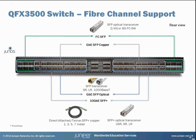When you configure FC interfaces on the QFX 3500, you must configure either 6 or 12 of the physical interfaces as native FC interfaces. Native FC interfaces connect to the FC SAN switch. You can configure ports 0 through 5 as Fibre Channel interfaces and ports 42 through 47 to create blocks of native Fibre Channel interfaces. You cannot individually configure a single port as a native FC interface. With these port blocks, you cannot mix FC interfaces with Ethernet interfaces, and all ports in a block must be either native FC or Ethernet interfaces.